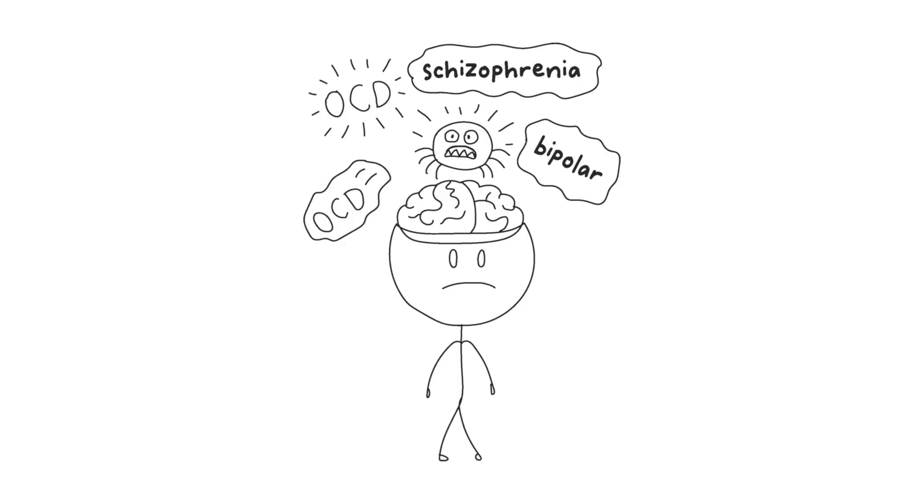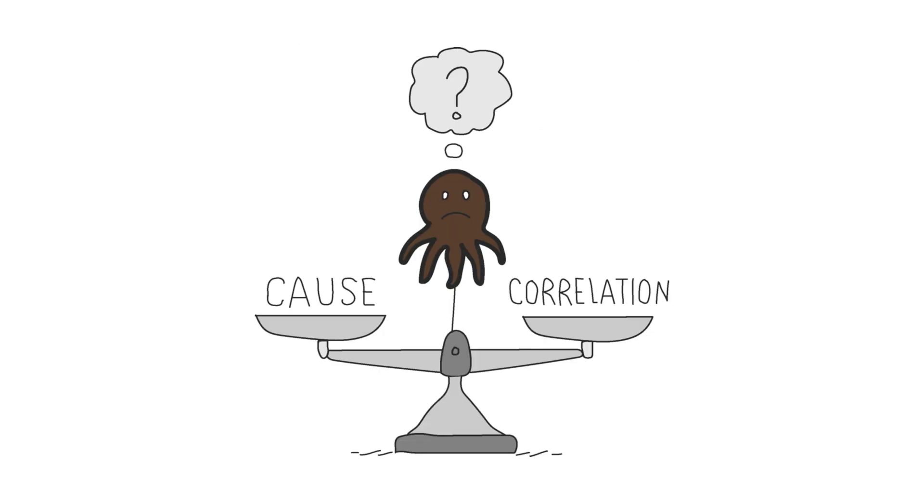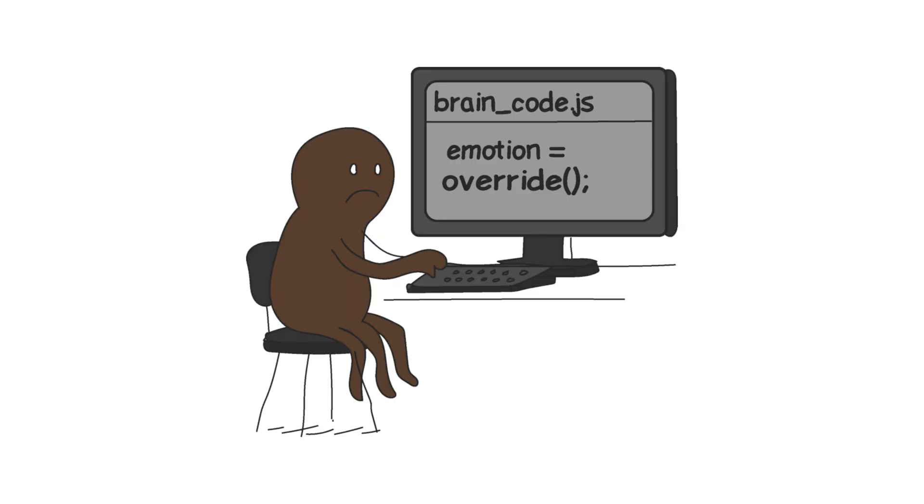But there's more. Some research links Toxoplasma Gandhi to serious mental disorders like schizophrenia, obsessive-compulsive disorder (OCD), bipolar disorder. A 2012 study found that people with schizophrenia are 2.7 times more likely to be infected. Causation or correlation? We still don't know, but the connections are there and they're disturbing. Because they force us to ask an uncomfortable question: How much of what we think, feel, and decide is truly ours? And how much is just an outside input, a line of code written by a parasite? Your brain: original hardware, pirated software.